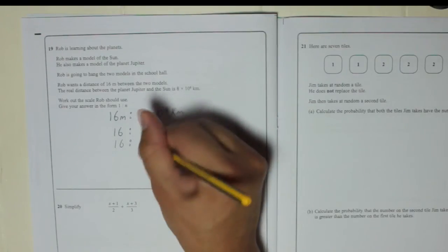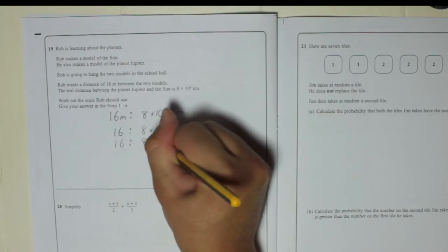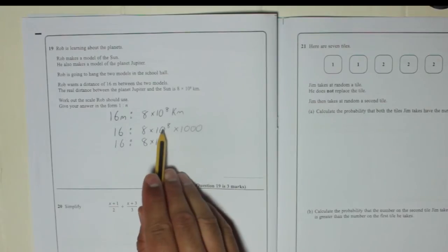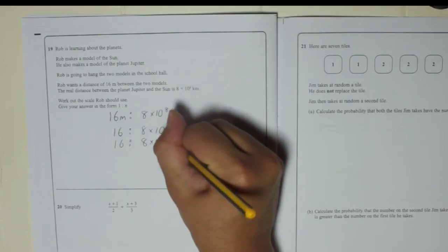So that means we get 8 times 10 to the power of, and we're going to times it by 10 once, that would make it to the power of 9. Times it by 10 twice, that would make it to the power of 10. Times it by 10 another time, that would make it 8 times 10 to the power of 11.